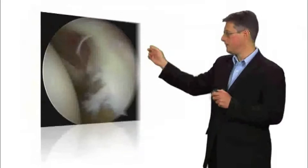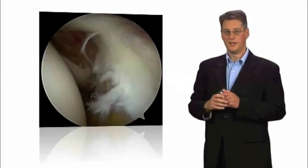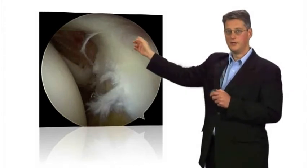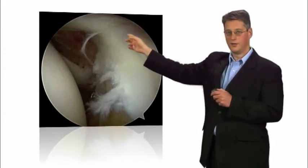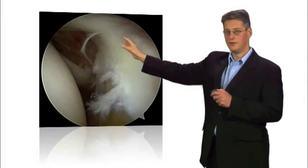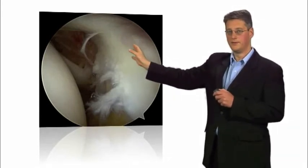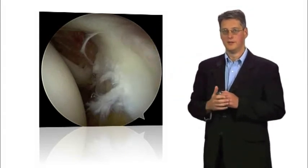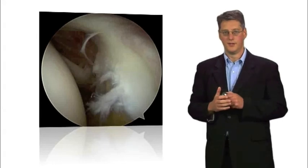Here you see a typical picture that we see at arthroscopy of a superior labral tear or SLAP tear at the top of the shoulder. You can see the humeral head which is the ball of the ball and socket joint to my far right, and the tear is closer to me over here at the top of the glenoid labrum.